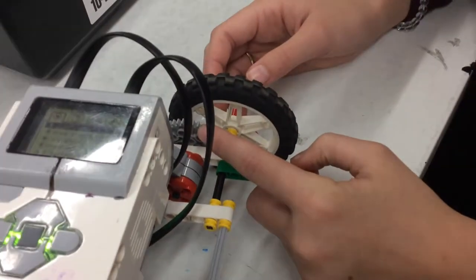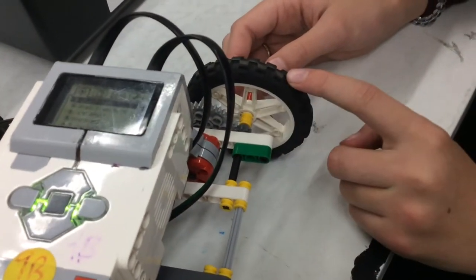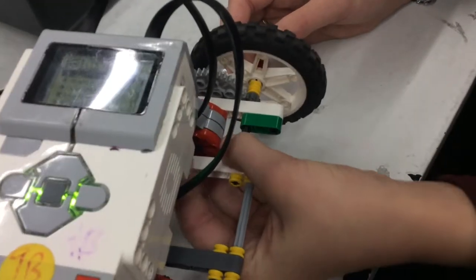The lead gear is attached to the motor and the following gear is attached to the wheel, which makes the wheel turn faster than the motor.